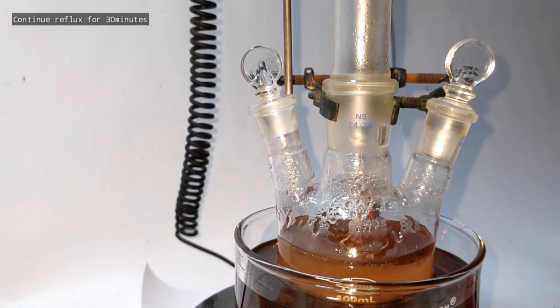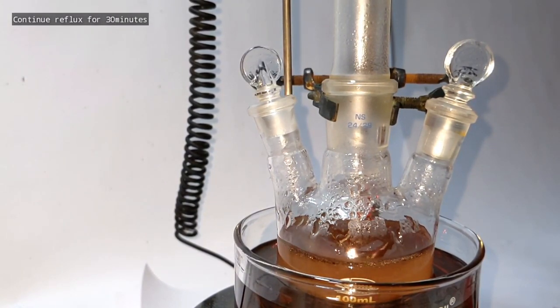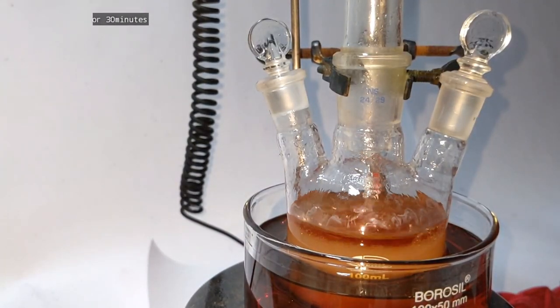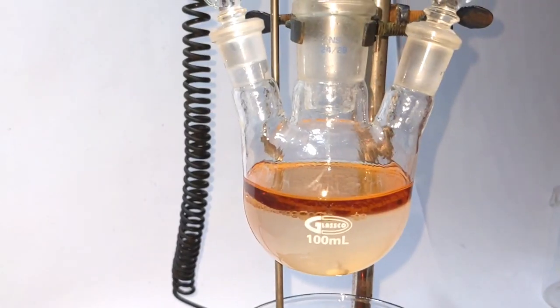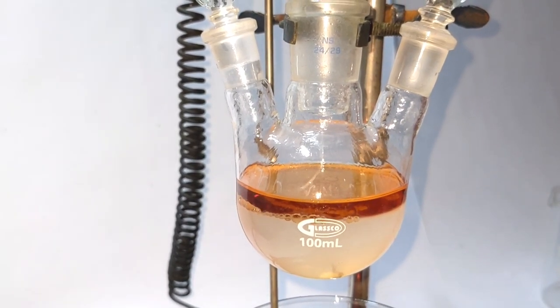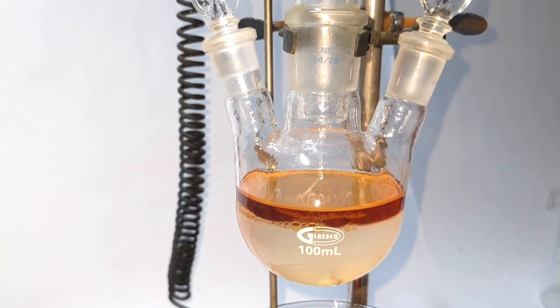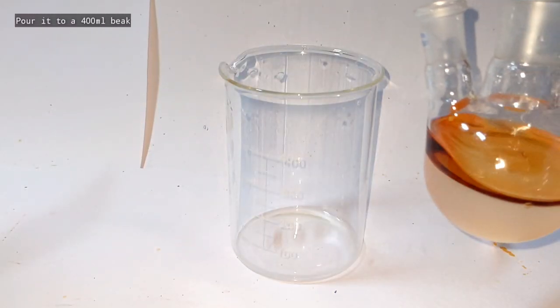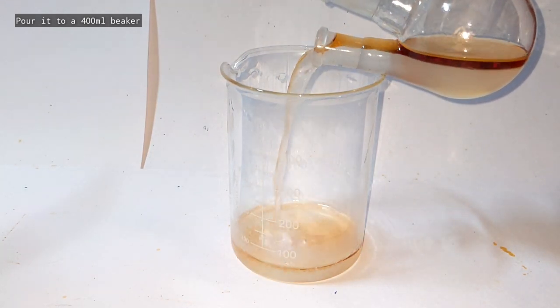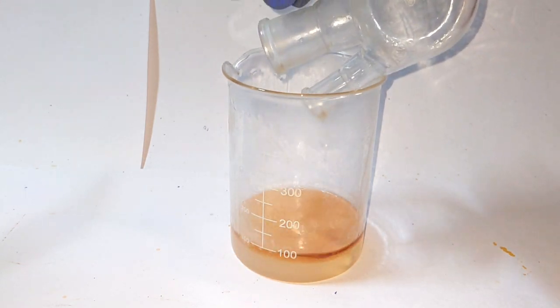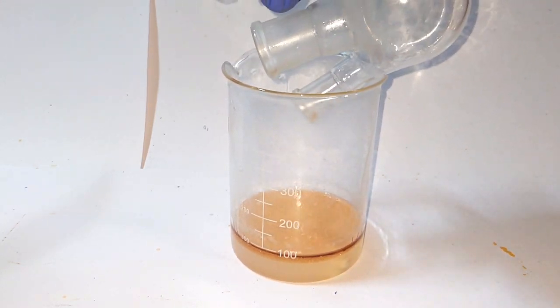After 30 minutes the reflux was stopped and the flask was left undisturbed for few seconds and immediately the oily amine layer separated out. The contents of the flask was then poured into a large 400 ml beaker while it is still hot. And then we allow the contents of the beaker to cool down to room temperature.